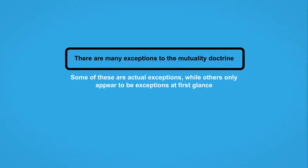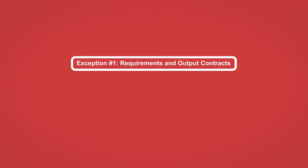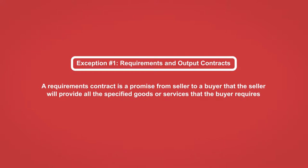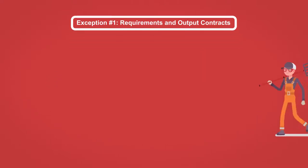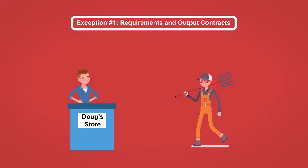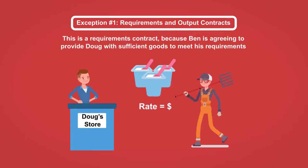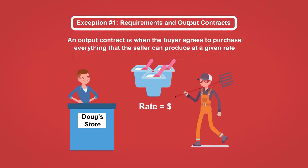Exception number one: requirements and output contracts. A requirements contract is a promise from a seller to a buyer that the seller will provide all the specified goods or services that the buyer requires. For example, if dairy farmer Ben agrees to provide Doug, who owns a small grocery store, with all the yogurt Doug needs for the next 12 months at a specified rate, this is a requirements contract because Ben is agreeing to provide Doug with sufficient goods to meet his requirements.